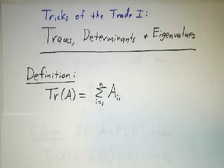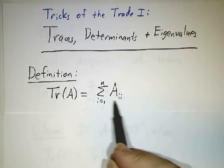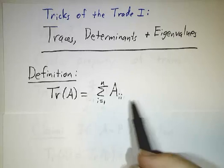For traces, the definition of the trace of a matrix is just the sum of the diagonal entries: a11 plus a22 plus a33 and so on.